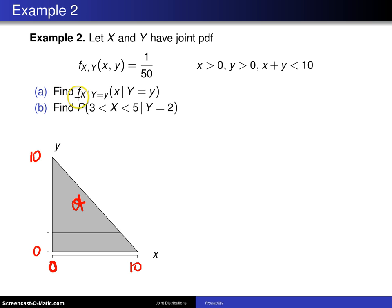First thing to do is to find the conditional density function of X given Y equals y and after that find the probability that X lies between 3 and 5 given Y equals 2 using that probability density function. So here is how it goes.